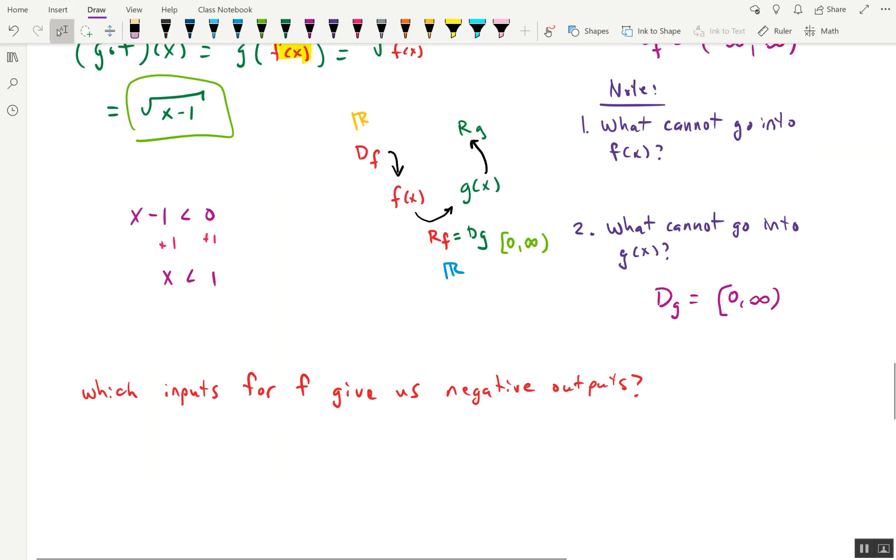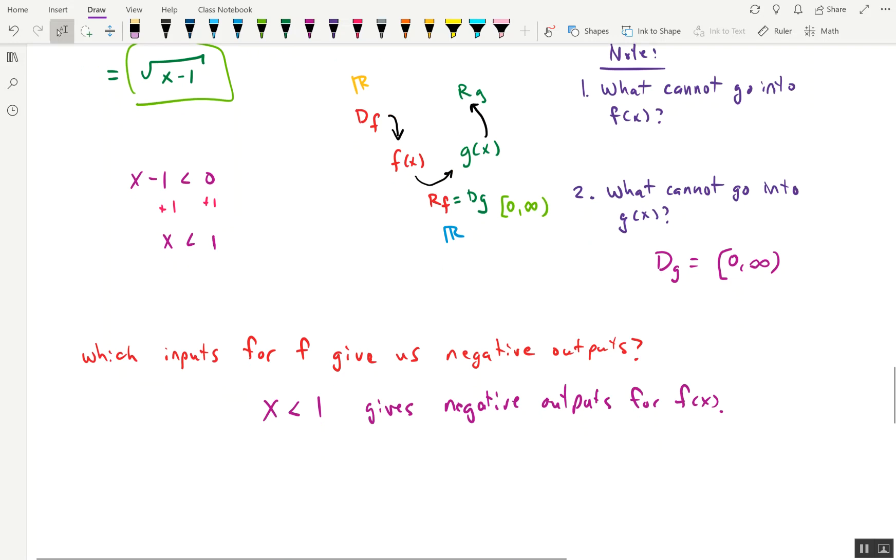Now we can answer our question. Which inputs for f give us negative outputs? Well, any x value that's less than 1 gives us negative outputs for the function f. So our domain then, we can just write down our answer now. So the domain of g of f would be 1 to infinity, including 1. That's it.